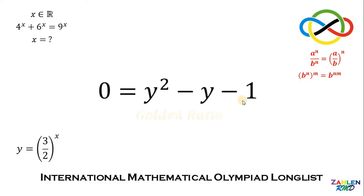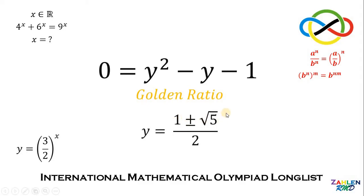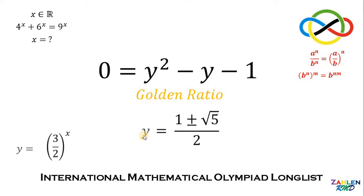We have 0 equals y squared minus y minus 1. This equation is familiar because it gives us the golden ratio. Solving using the quadratic formula, we get y equals 1 plus or minus the square root of 5, all over 2, which is exactly the golden ratio.